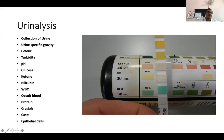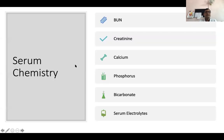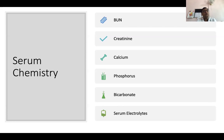This is the dipstick test for urinalysis. For serum biochemistry, blood urea nitrogen and creatinine are very important. Calcium and phosphorus are also important, along with bicarbonate and electrolytes, because they are correlated — when phosphorus level increases, acidosis or alkalosis can occur. Serum electrolytes — sodium and potassium — are also very important. Creatinine is more specific than BUN in serum biochemistry, and the BUN-to-creatinine ratio is also very important and can be found in manuals.